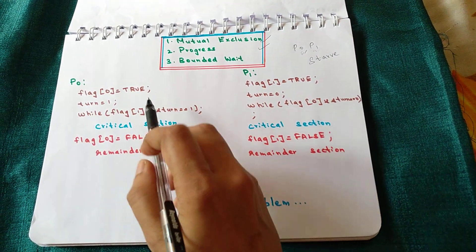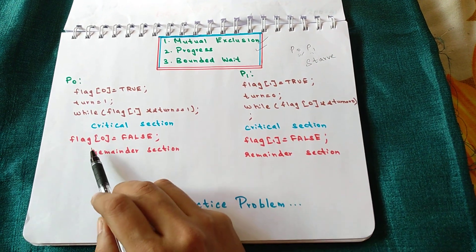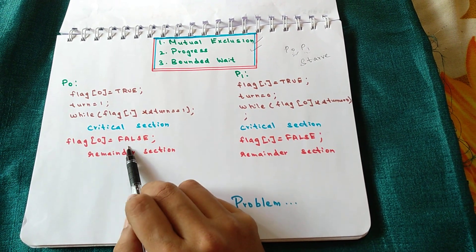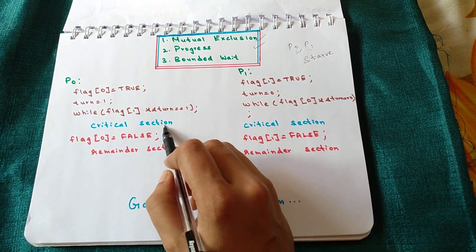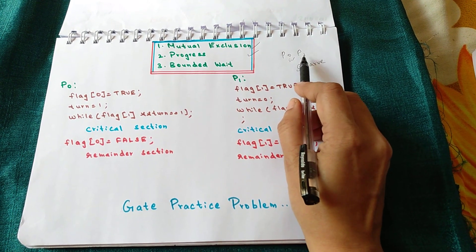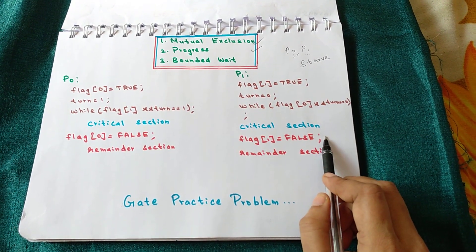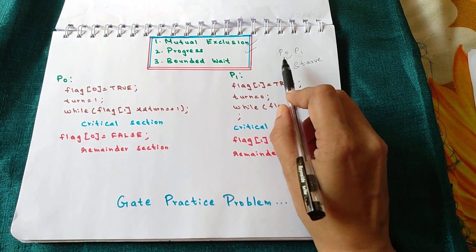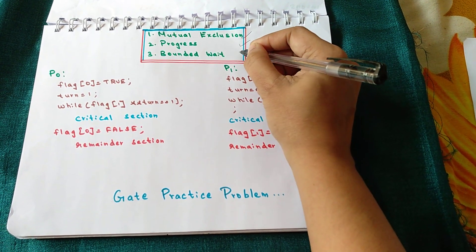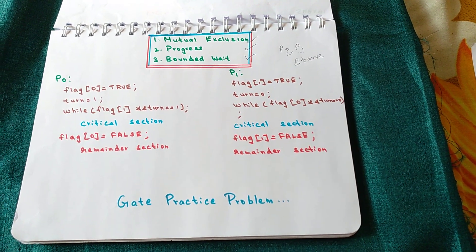In Peterson's solution, whenever P0 finishes executing in the critical section, it sets `flag[0]` to false, meaning it is no longer interested in entering. This gap allows P1 to enter the critical section. Similarly, when P1 finishes, it sets `flag[1]` to false, allowing P0 to enter next. Therefore, no process faces indefinite waiting or starvation, and the bounded wait requirement is satisfied by Peterson's algorithm.